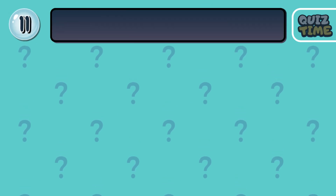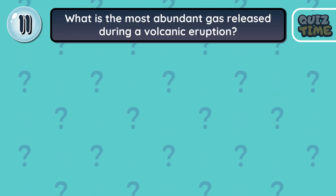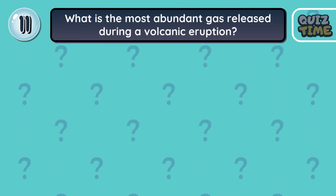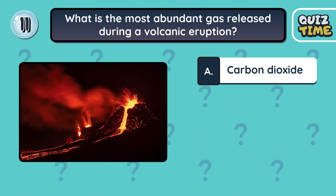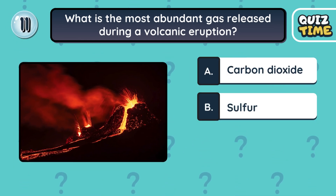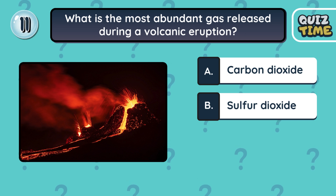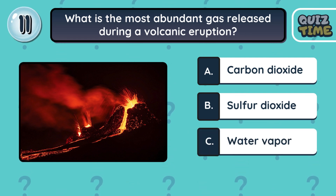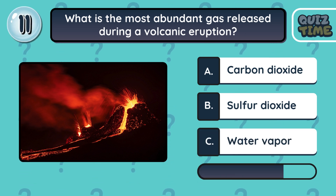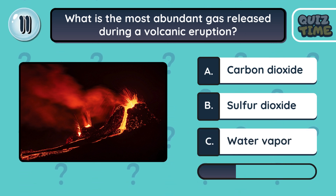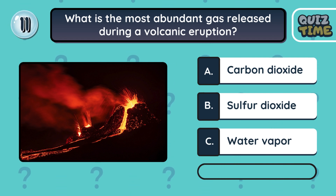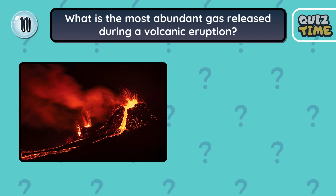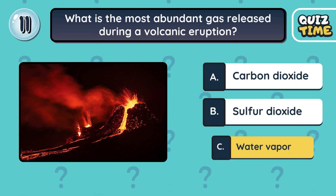Number 11. What is the most abundant gas released during a volcanic eruption? A. Carbon dioxide. B. Sulfur dioxide. C. Water vapor. The correct answer is C. Water vapor.